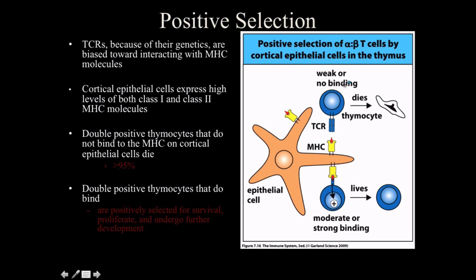For T cell receptors, because of their genetics, they're going to be biased towards interacting with MHC molecules anyway, because they co-evolved together. Cortical epithelial cells express high levels of both MHC class 1 and class 2 molecules, which is important.